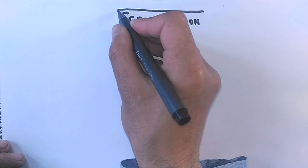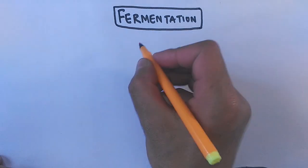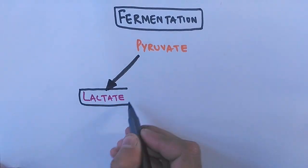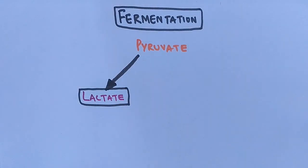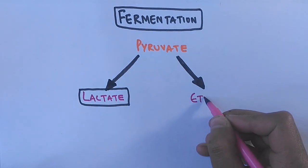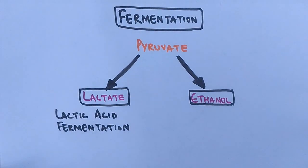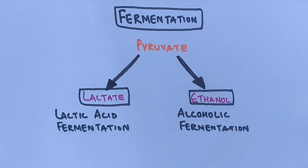Fermentation is of two types based on the final electron acceptor. If pyruvate is converted to lactate, we call it lactic acid fermentation — the pyruvate from glycolysis undergoes a simple redox reaction forming lactic acid. This occurs in some bacteria such as Lactobacilli and some fungi; it's this type of bacteria that converts lactose into lactic acid in yogurt, giving it a sour taste. If pyruvate is converted to ethanol, we call it alcoholic fermentation, which also produces carbon dioxide as a by-product.